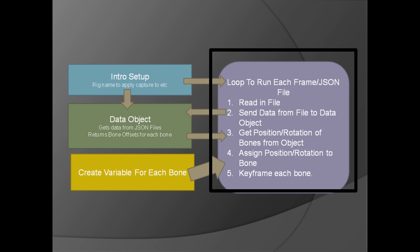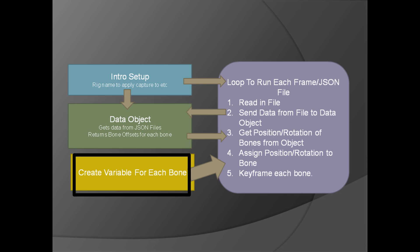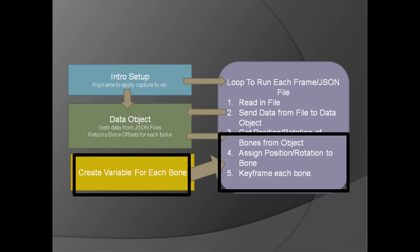The loop will read in a file and send it to the object. The object will convert the data into suggested positions and rotations for the bones, return them, and then the variable for each bone will be assigned its position and rotation.